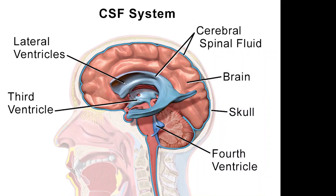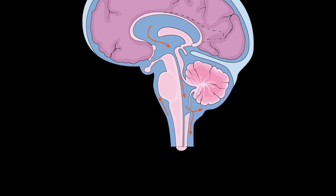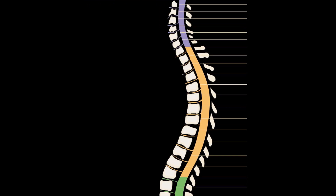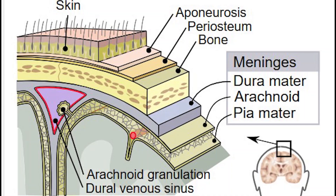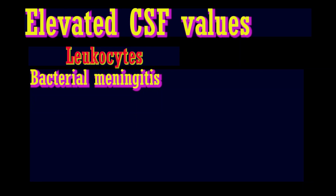What is CSF? Cerebrospinal fluid (CSF) is a colorless, clear body fluid found in the tissue that surrounds the brain and spinal cord of all vertebrates. CSF is produced by specialized ependymal cells in the choroid plexus of the ventricles of the brain, and absorbed in the arachnoid granulations. There is about 120 ml of CSF at any one time.